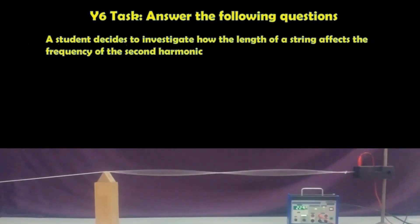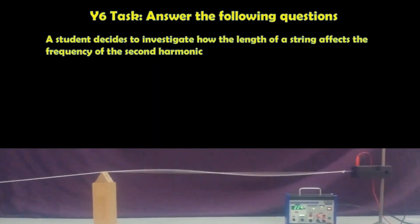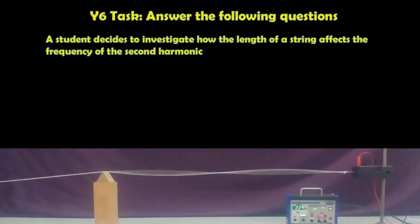Since we're not in the position where you guys can go and investigate this yourself and change the variables that you want to get Core Practical 7 done, you must answer the following questions. They're all based on a student who decided to change the length of the string and then adjust the signal generator until they achieve the second harmonic. So they move the wooden structure backwards and forwards and then turn the dial on the signal generator to get this harmonic that you see in front of you now. Now this harmonic is very convenient because by taking a direct measurement of the length between the node here and the node here, you have the wavelength.